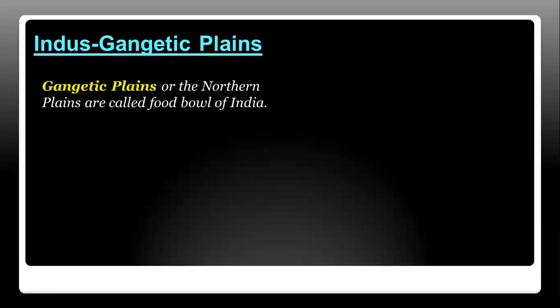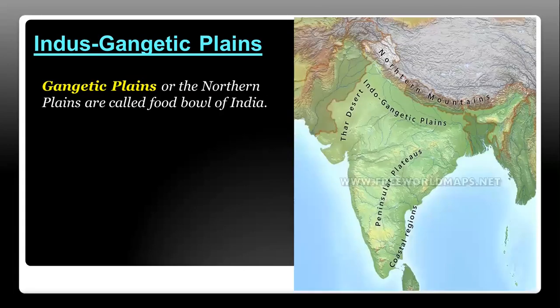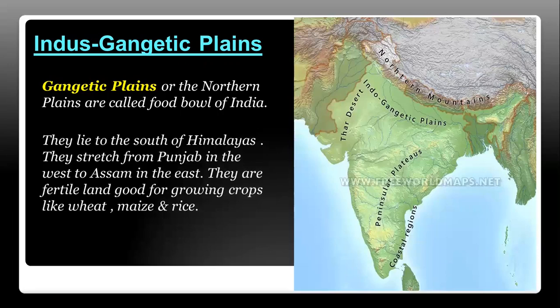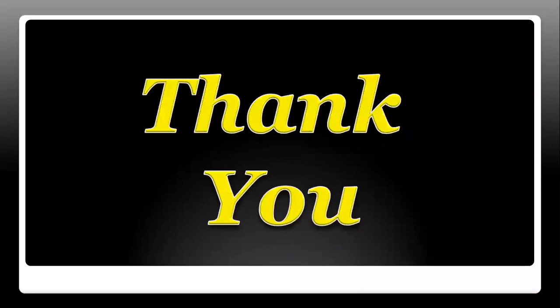The Indus-Gangetic Plains, or the northern plains, are called the 'food bowl of India.' They lie to the south of the Himalayas and stretch from Punjab in the west to Assam in the east. They are fertile land, good for growing crops like wheat, maize, and rice, and are one of the largest plains in the world.